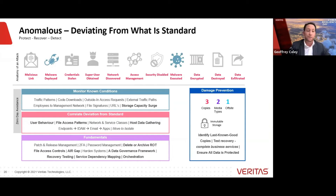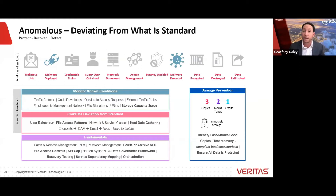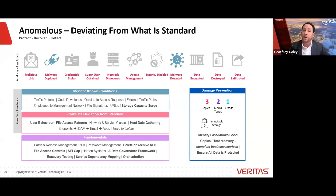We talked about passwords and patch and release management, but what about archive data — data that's redundant, obsolete, or trivial? Should we have the confidence to delete data? Do we know what we've got, why we have it, where it is, and what risk it poses? What about compliance, prudential standards, or PII — personally identifiable information? What exposure does that give us? Consider air-gapping your environment, a data governance framework, recovery testing, service dependency mapping, orchestration, and the 3-2-1 rule: three copies of your data, different media types, and off-site.